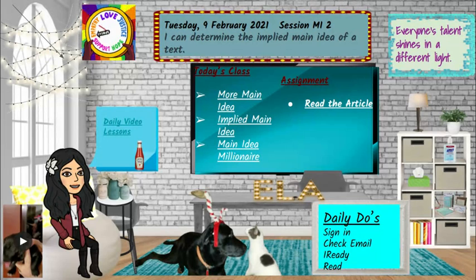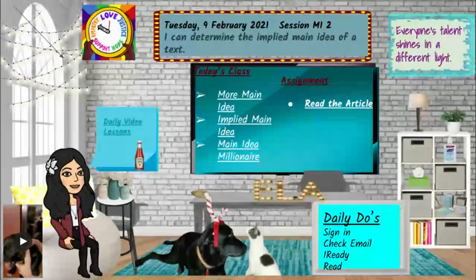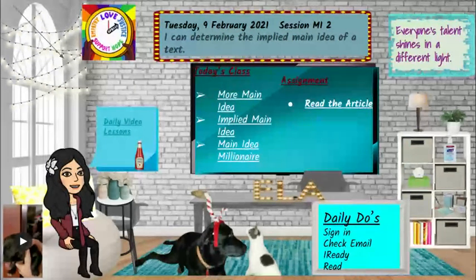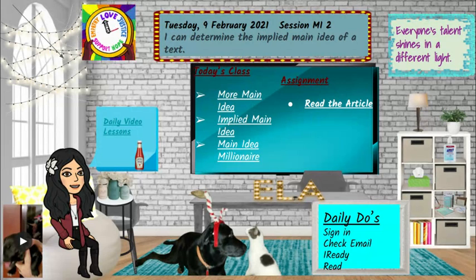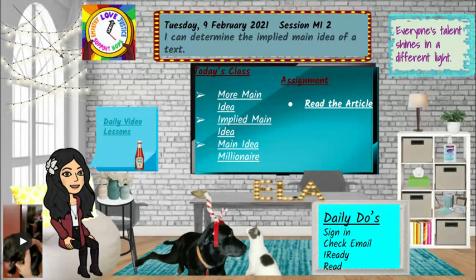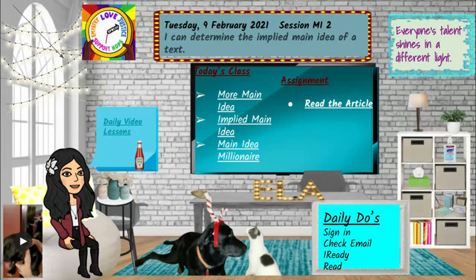Your assignment today is to read a Newsela article and answer the questions. There are only four questions, which is both good and bad. Four questions is very short, so you don't have to do a lot of work. However, four questions also means each question is worth a lot — if you miss one, you only get a 75%, which is a C. So focus, pay attention, highlight, annotate, do whatever you have to with the article to make sure you're understanding it.